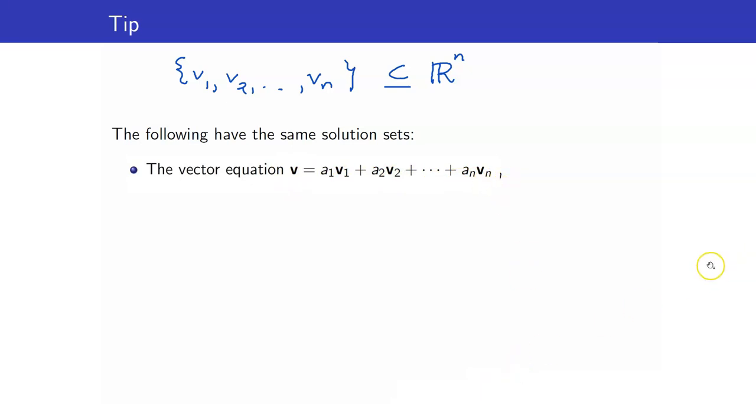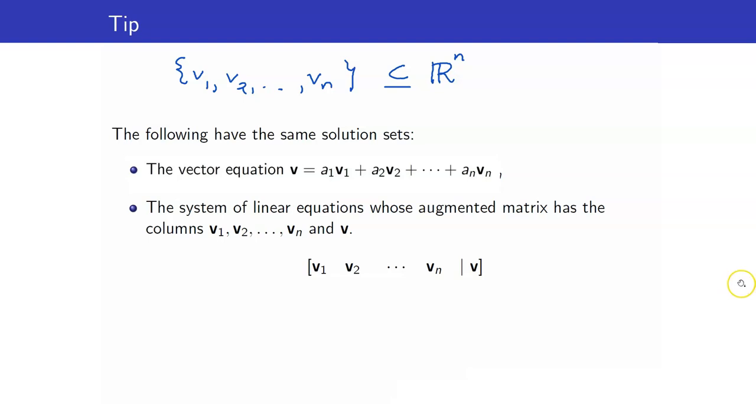What do you need to do? You just have to form this augmented matrix, wherein the columns will be your vectors V1 up to Vn. The B here, this is your B, this is your coefficient matrix. This B over here will be the vector that you are testing.